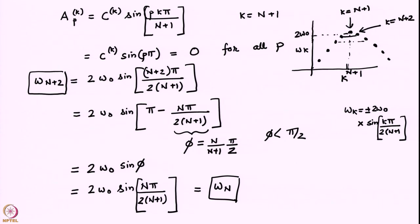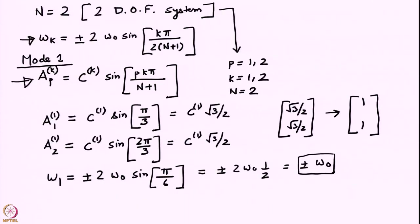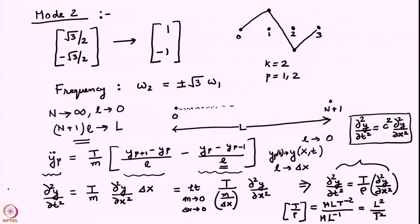We had applied this to the case of a 2 degree of freedom system, which by definition can only have at most 2 normal modes. Mode 1 was the eigenmode (1,1) with eigenfrequency ±ω₀. Mode 2 was (1,−1) with frequency ±√3·ω₁, identical to what was obtained earlier. We also said it would be instructive to take the limit of the number of masses going to infinity, and we are going to continue further with this.